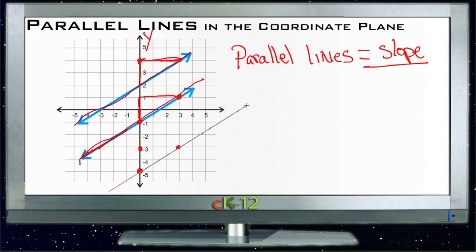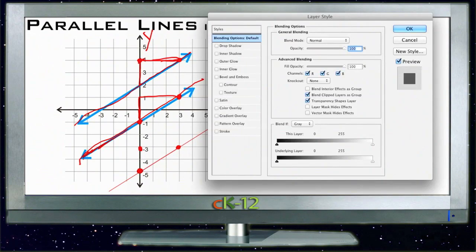So parallel lines in the coordinate plane have the same slope, and you can either use that to find the slope of one line that's already there, or you can find another line that has the same slope or that is parallel by just using the same slope and using a different y-intercept. And recall, if you hadn't seen it before, that the y-intercept...